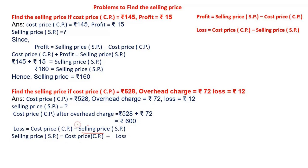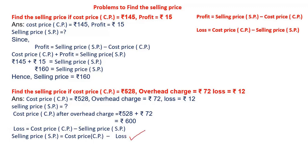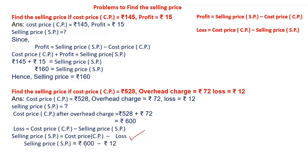As you can see, selling price was minus in the beginning; I shifted it from right to left. Loss in the beginning was plus; I shifted it from left to right, so it became minus. After that we got the formula: selling price is equal to cost price minus loss. Now substituting the values: selling price is equal to 600 minus 12. Subtracting 12 from 600, I will get the answer as rupees 588. Hence selling price is equal to rupees 588.